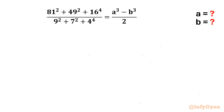Welcome back to Infigyan, my dear friends. In today's video we have one very interesting and challenging question from algebra. The problem is: (81² + 49² + 16⁴) / (9² + 7² + 4⁴) = (a³ - b³) / 2. We have to find the value of a and b.